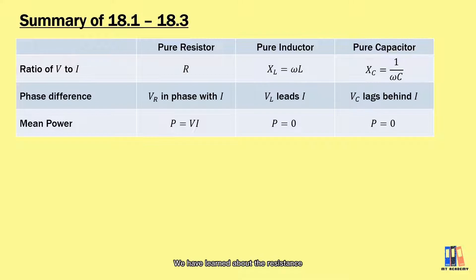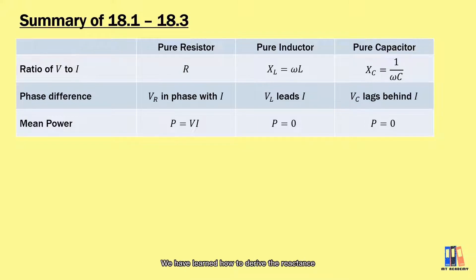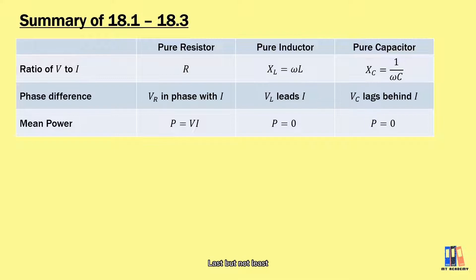We have learned about the resistance or the reactance of each of these components, which is the opposition to the current flow in an AC circuit. We have learned how to derive the reactance and learned about the phase difference between the voltage and the current in the circuit. Last but not least, we also learned about the mean power dissipation in each of these components.